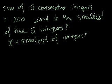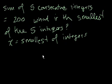Well, if x is the smallest, what are the other four going to be? We have a total of five. They're consecutive — consecutive just means that they follow each other, like 5, 6, 7, 8, 9, 10. All of those are consecutive integers. And remember, integers are just whole numbers, so it can't be a fraction or a decimal.